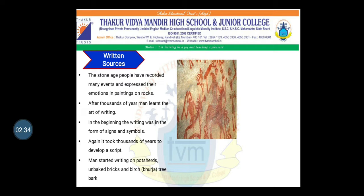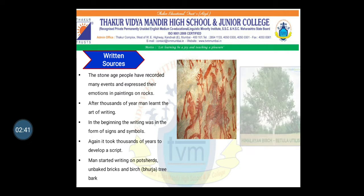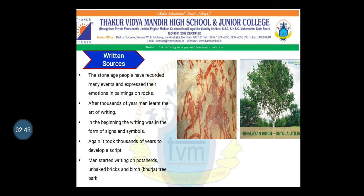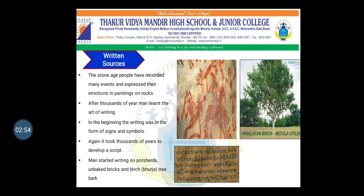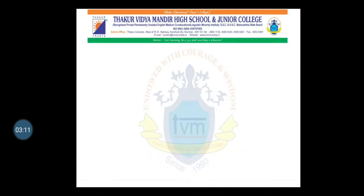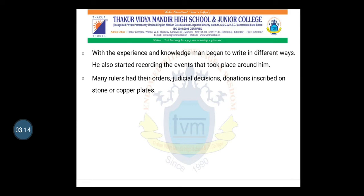After that, man started writing on pot sherds, unbaked bricks, and birch tree bark. This is a birch tree, called 'bhurj' in Sanskrit. These birch trees are found in Kashmir. At that time, people started writing on sheets made from the bark of these bhurj trees, which are known as bhurj patras. Here you can see bhurj patras in the picture.